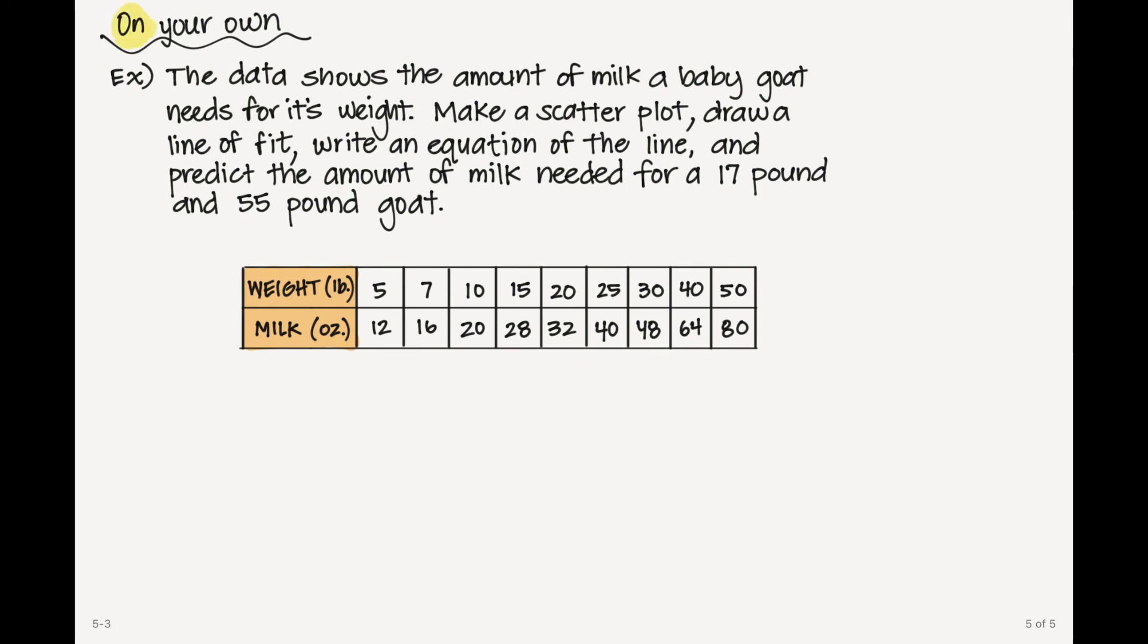So what I'd like you to do now is to try one problem on your own. The data here shows the amount of milk a baby goat needs for its weight. You're going to make a scatter plot, draw a line of fit, write an equation of the line, and predict the amount of milk needed for a 17 pound and a 55 pound goat. And that's it. So try this out. I'll see you in class.